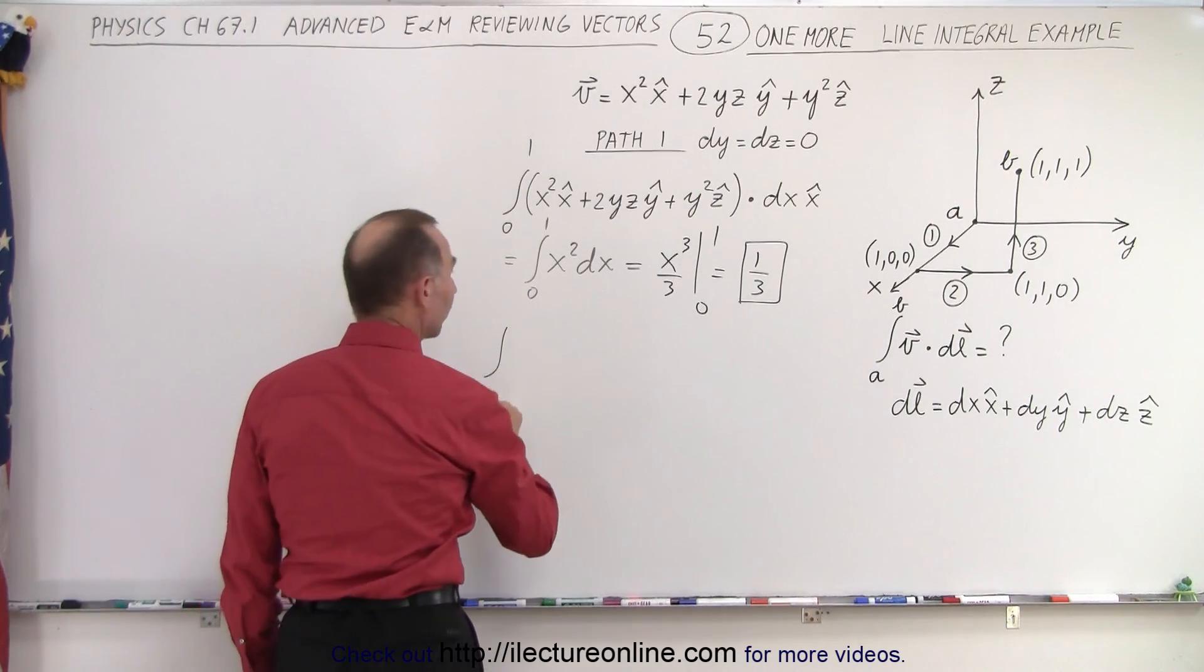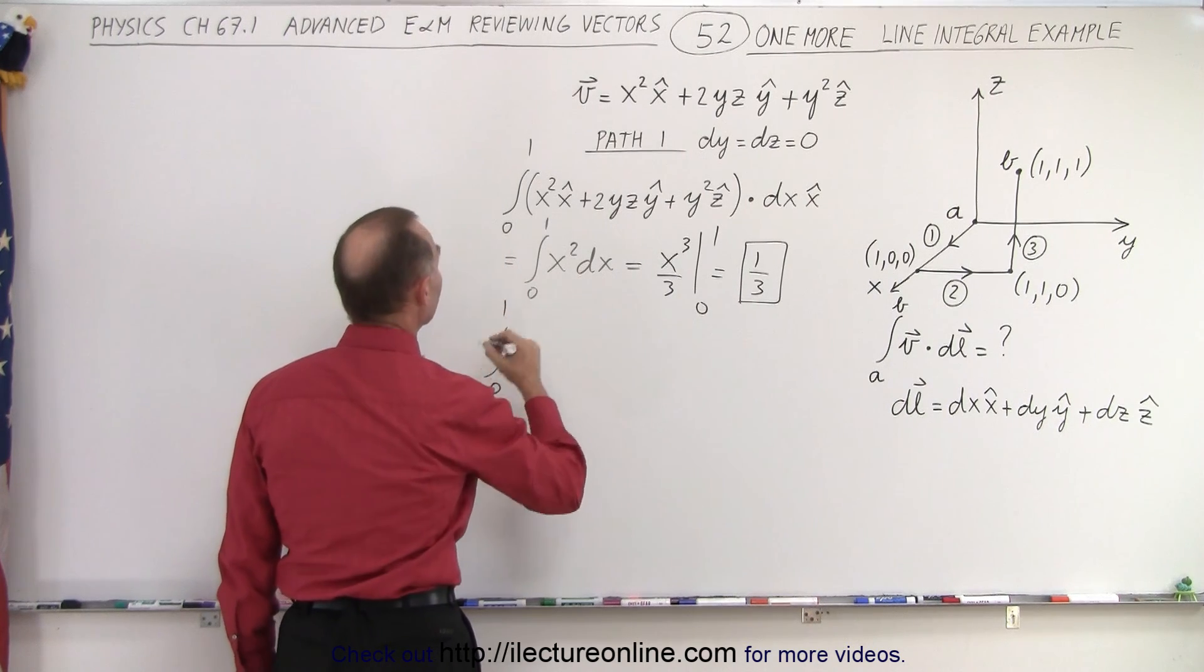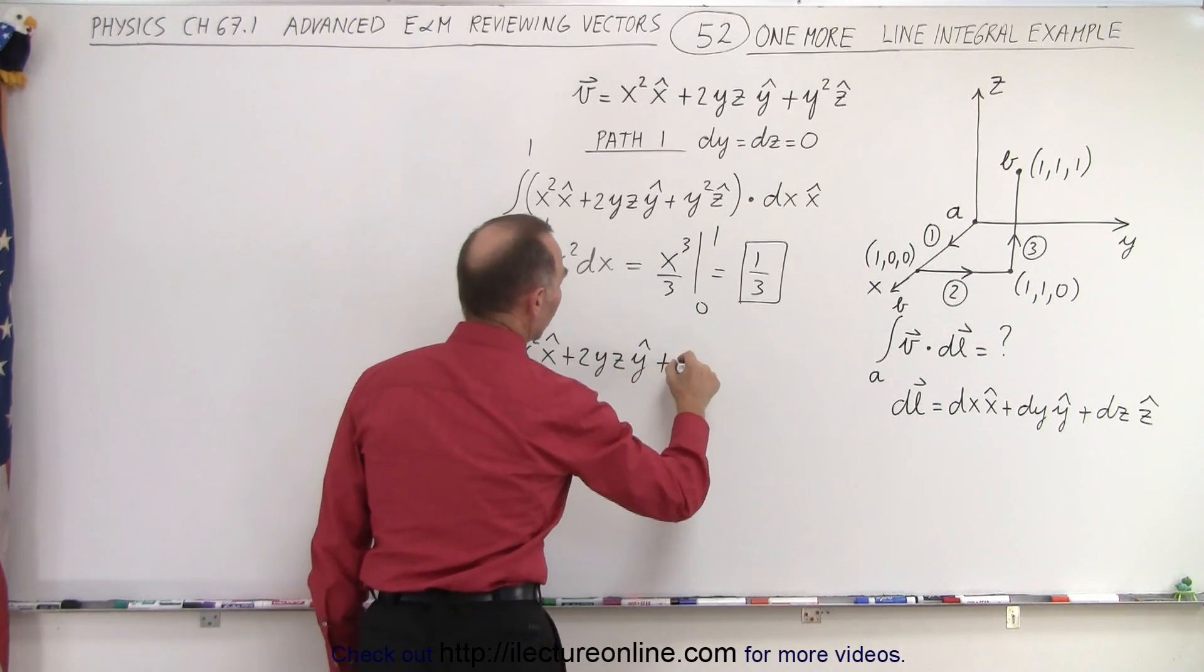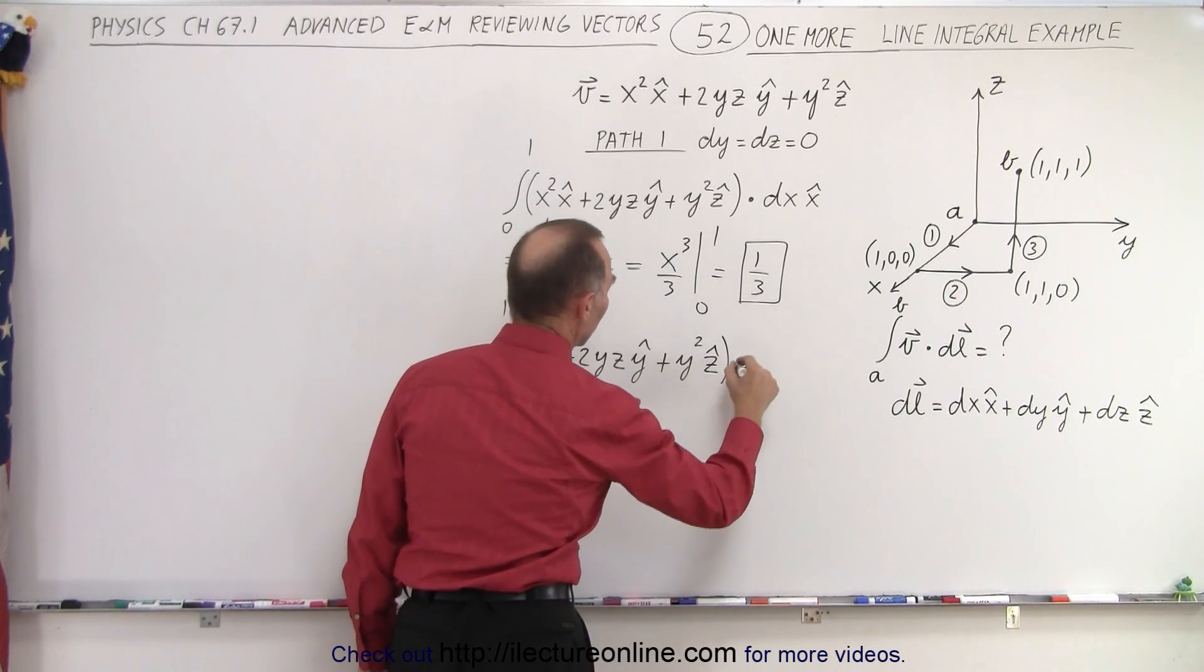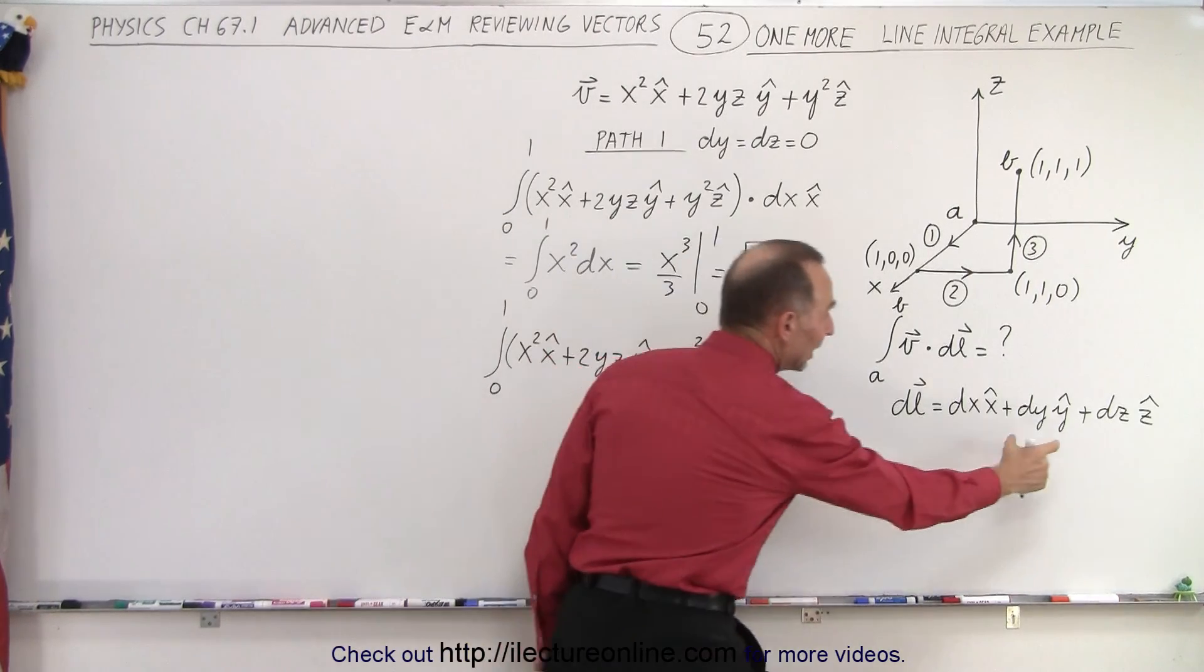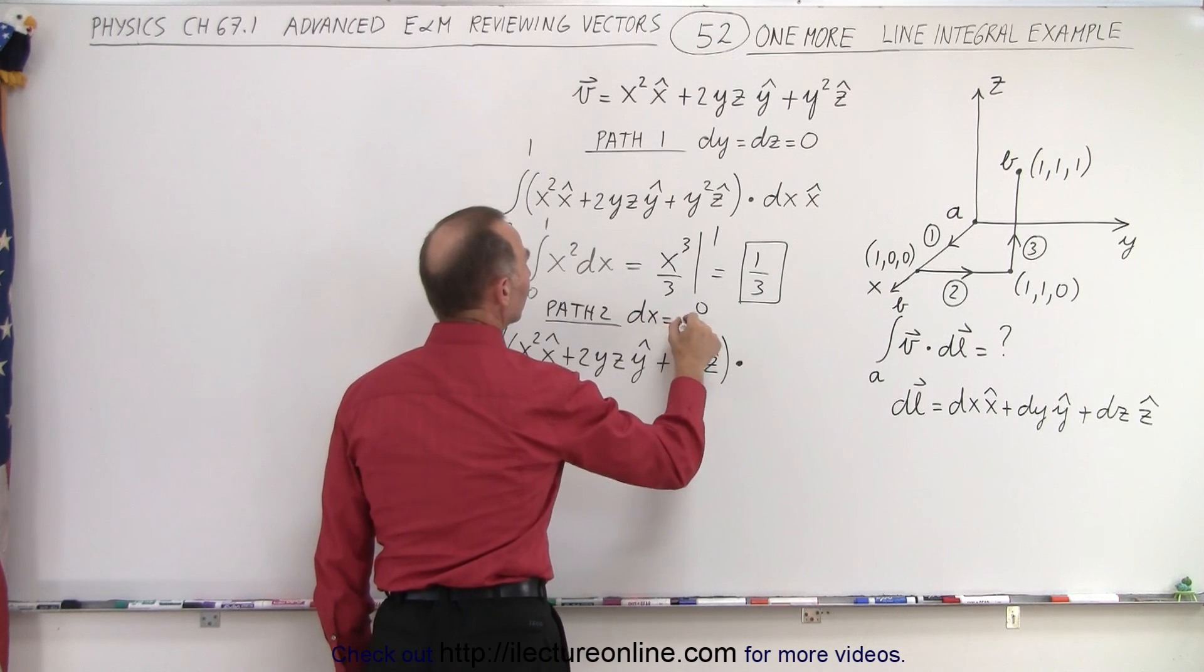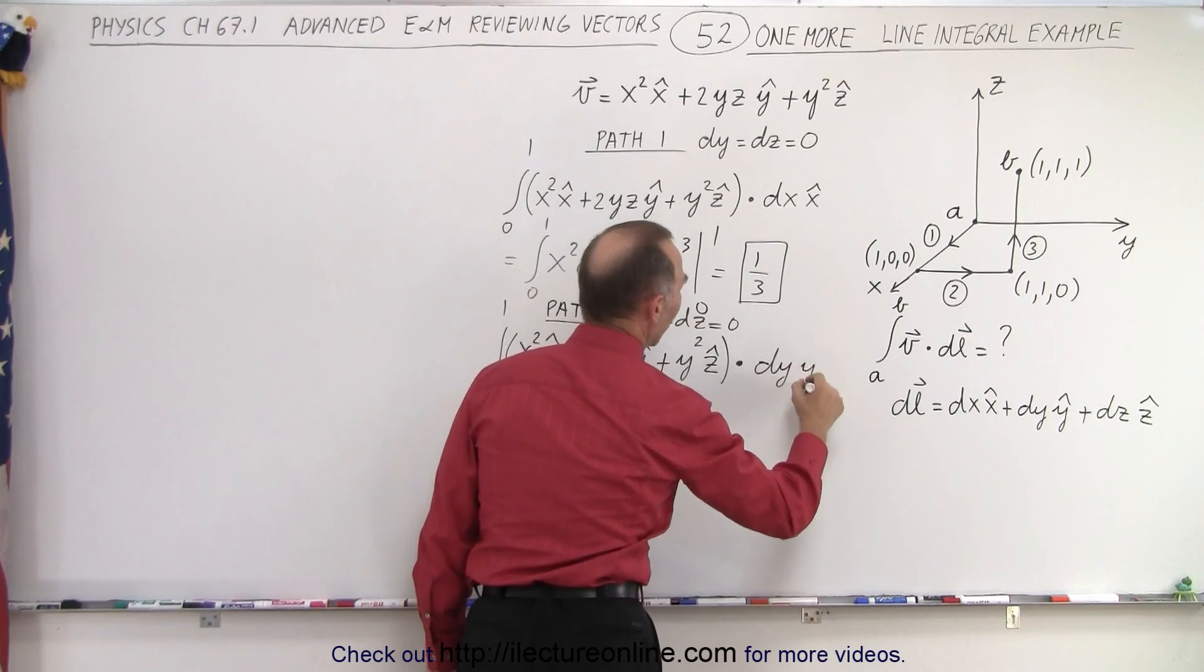Path number 2, we're going to move in the y-direction from 0 to 1. And again we have the vector x squared in the x-direction plus 2yz in the y-direction plus y squared in the z-direction. And then we take the dot product with dl. In this case the only surviving term is going to be the dy, because when we go along path 2 we can say that dx is equal to dz is equal to 0.